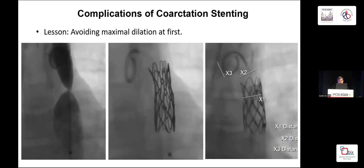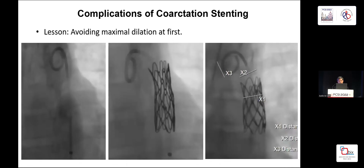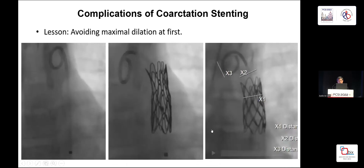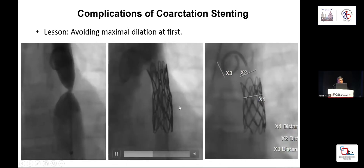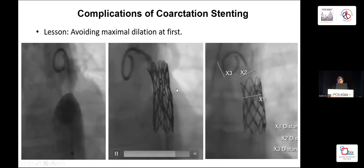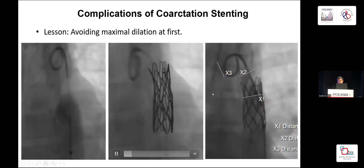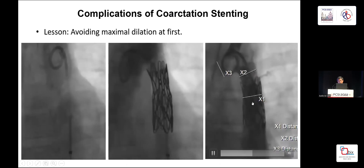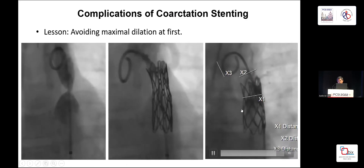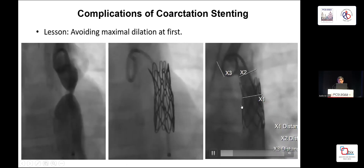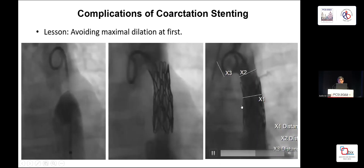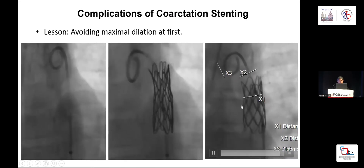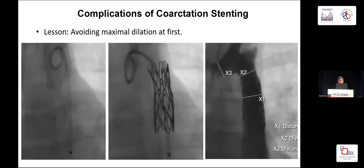I changed my practice for small patients: I now place the stent with just enough expansion for the patient and keep some residual waist. Four months later, I can use a balloon to achieve further dilatation and get the maximum result.